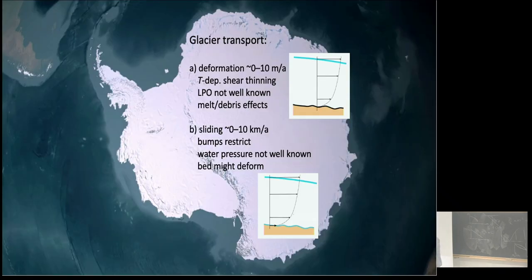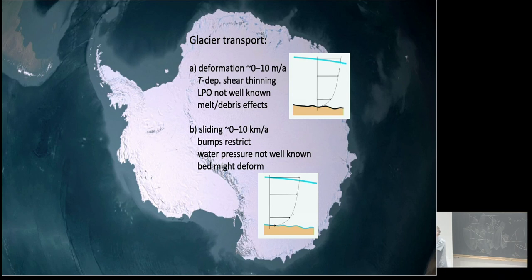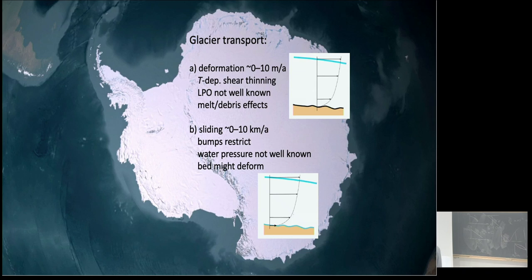I'm going to give you a quick primer in glaciology. There are basically two ways of moving ice in glaciers. You can deform the ice — that deforms at rates typically on the order of meters per year. There's some uncertainty: the viscosity depends on temperature and on LPO — lattice preferred orientation — because ice is an anisotropic material and how the crystals line up matters. If you get debris in the ice, that affects deformation too. The important thing is that deformation is pretty slow, just a few meters a year.